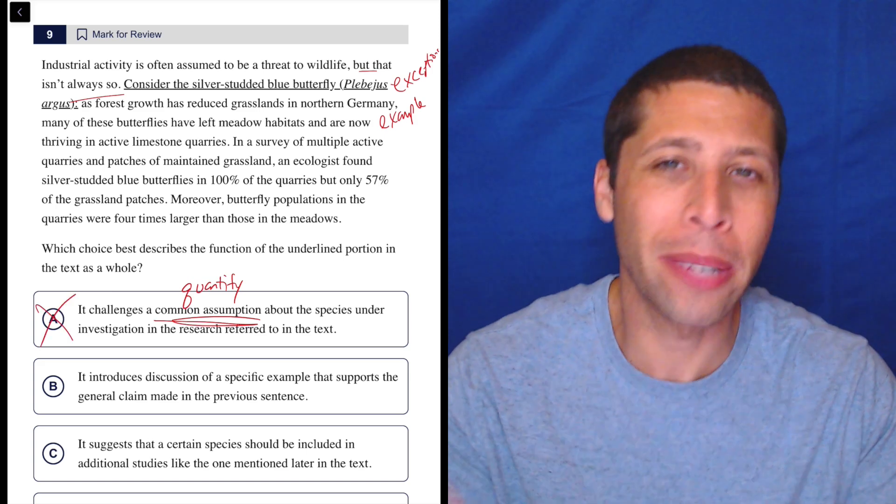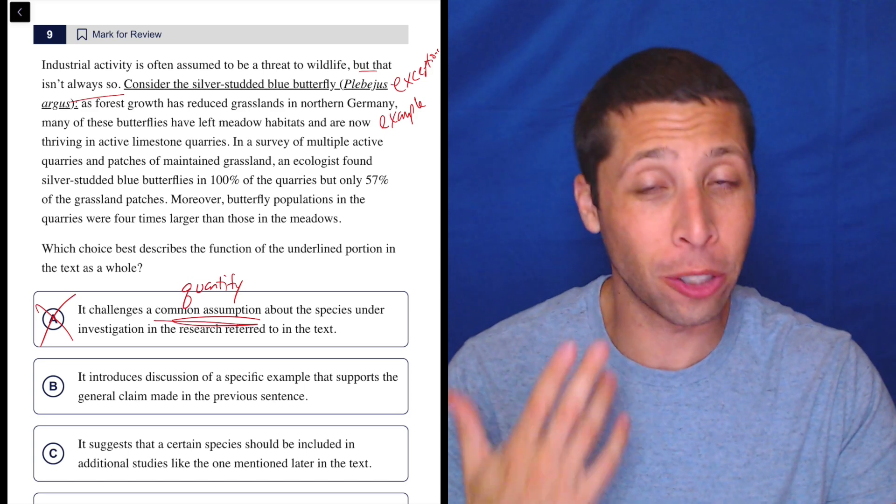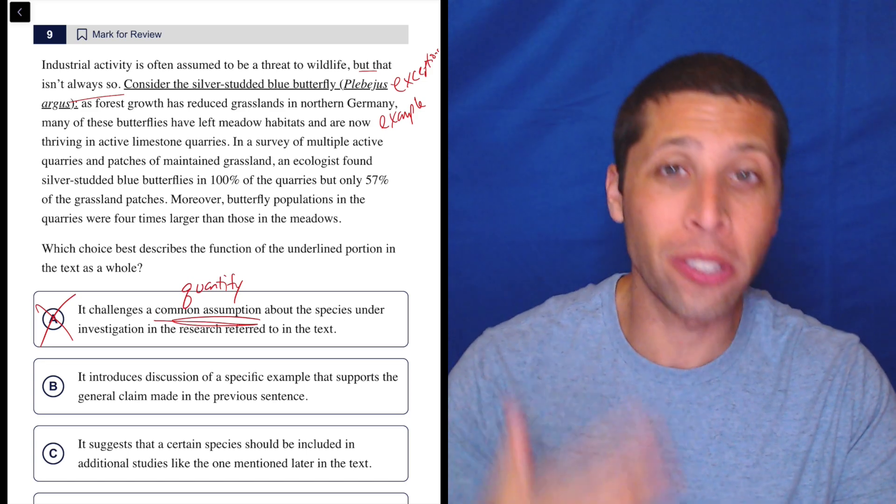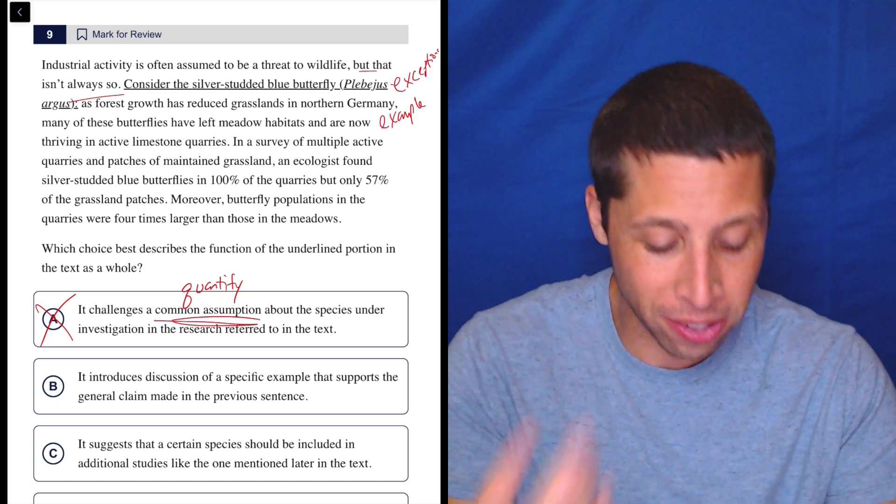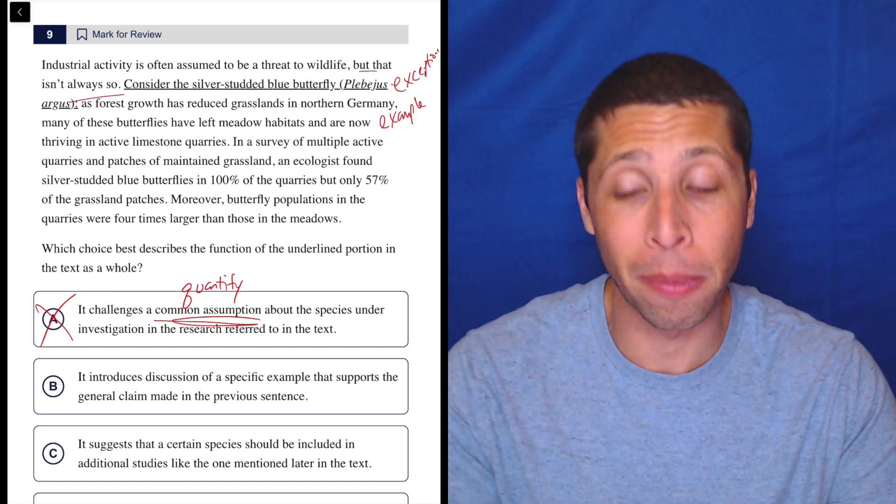So that just bothers me, right? Like, we don't know. They would need to say something like that. That's such a strong phrase. And this is why it's really good to train your brain to notice these kinds of common traps like quantifiers. It doesn't seem like a big deal that they're saying that, but that phrase is really a big problem for a choice like A.